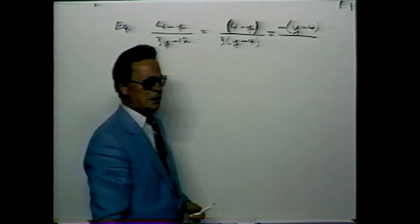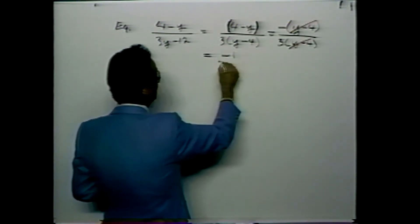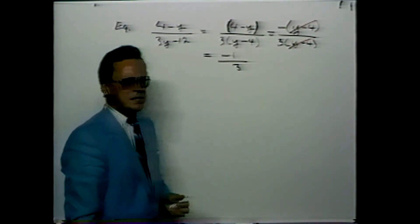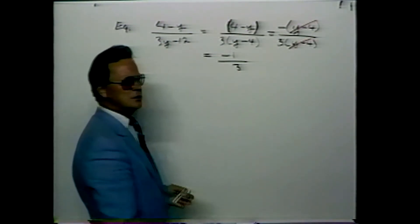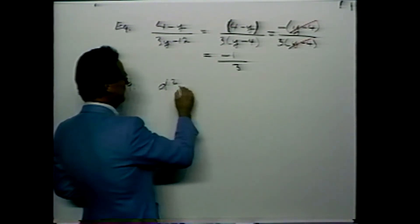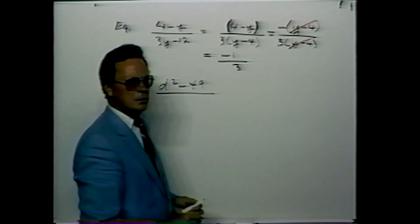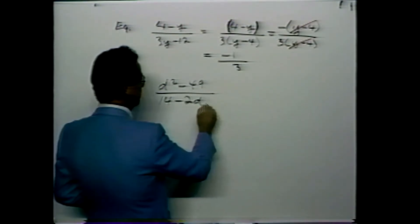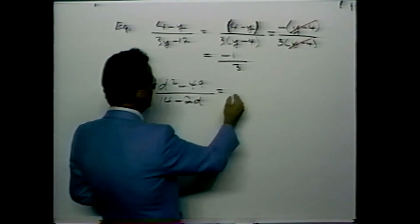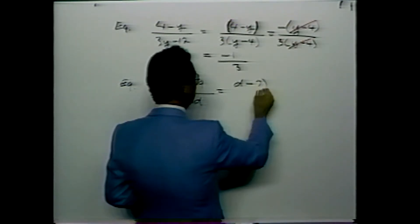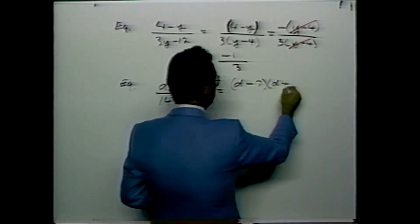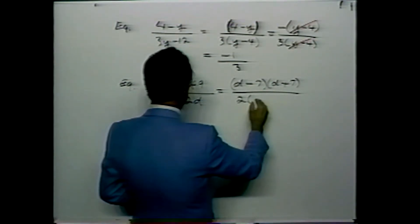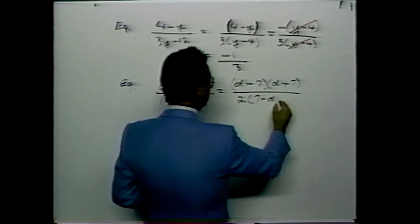We have 4 minus y over 3y minus 12. The expression 4 minus y cannot be factored further. If we place a minus sign in front of the bracket we can reverse the terms so the expression matches the denominator. This equals negative 1 over 3.